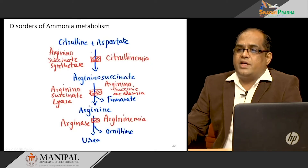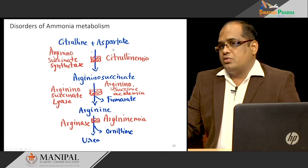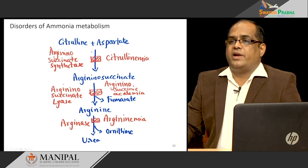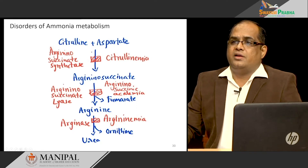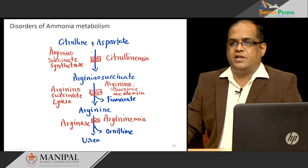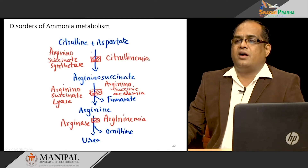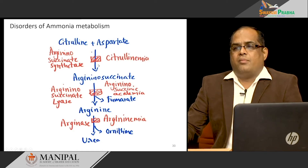Next, in the cytosol: citrulline combines with aspartate — the donor of the second nitrogen — to form arginosuccinate, and the enzyme required is arginosuccinate synthetase, which requires an ATP molecule. If you put a block in this reaction, citrulline accumulates and is not converted into arginosuccinate. This disorder — increased citrulline — is called citrullinemia, and is the third disorder of ammonia metabolism.